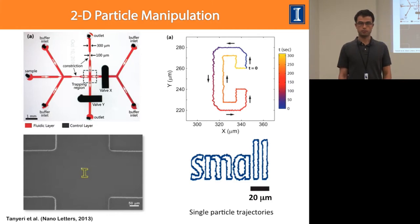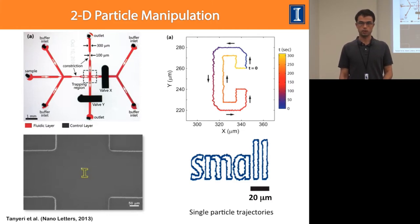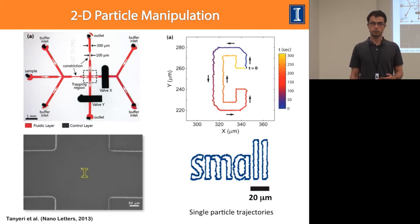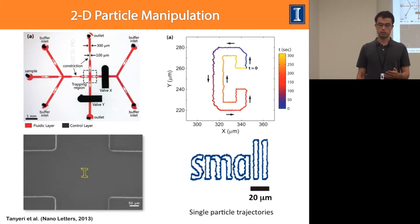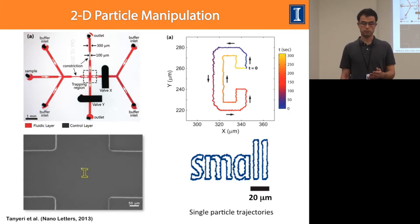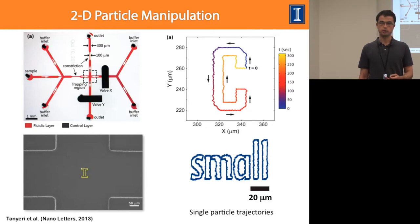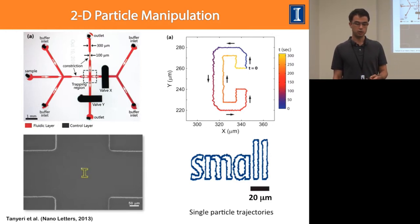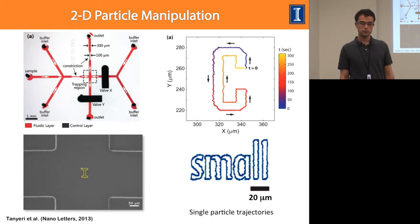We can generalize this to the stable flow-in direction to obtain 2D particle manipulation. The picture on the top right shows a microfluidic device with two valves — one on an outlet channel and one on an inlet channel — enabling stagnation point manipulation in both directions. This allows trapping a single particle and moving it around. The top right example shows trapping a particle at time zero and moving it to trace the letter C. On the bottom, more complex geometries are demonstrated by spelling the word 'small', with connecting trajectories between letters omitted for simplicity.